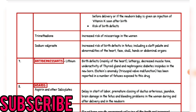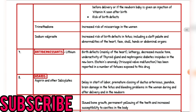Antidepressants: lithium — birth defects mainly of the heart, lethargy, decreased muscle tone, underactivity of the thyroid gland, and nephrogenic diabetes insipidus in the newborn. Abstinence anomaly: Ebstein's anomaly (tricuspid valve malformation) has been reported in a number of fetuses exposed to this drug. Acids — aspirin and other salicylates: delay in the start of labor, premature closing of the ductus arteriosus, jaundice, brain damage in the fetus, and bleeding problems in the woman during and after delivery and in the newborn.